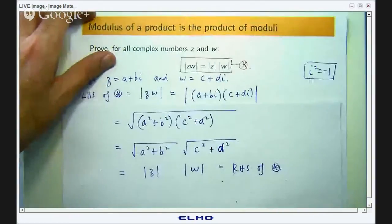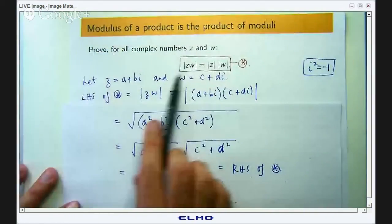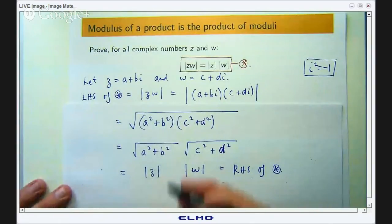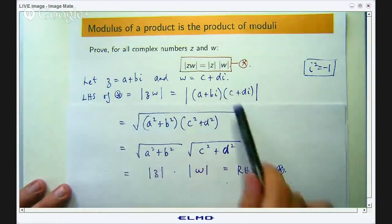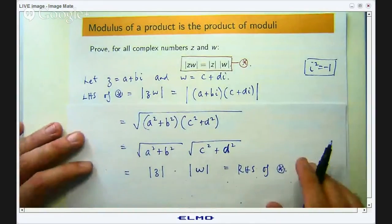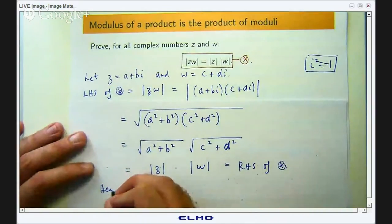Okay, so we've started with the left-hand side, we've done some manipulation to it, and we've got the right-hand side of the star. Hence the left-hand side and the right-hand side have got to be equal for all complex numbers z and w.